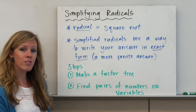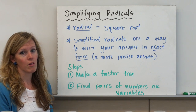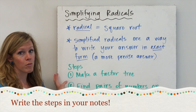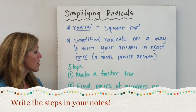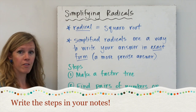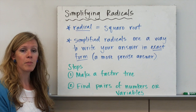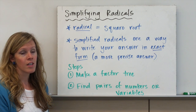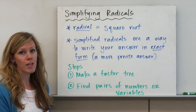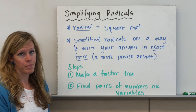There are two steps, basically, for simplifying radicals. Write these down in your notes. The first is to make a factor tree. And the second is to find pairs of numbers or variables. You'll see what we mean when we go through an example on the next page.